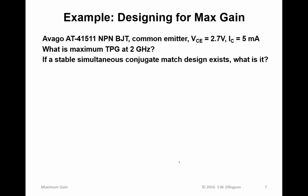Let's do an example. We previously discussed the Avago AT41511 transistor — it's an NPN BJT, bipolar transistor. We'll assume it's in common emitter configuration. Here's the collector-emitter bias voltage and the collector current. We need these only to look up the S-parameters. The question now is: what is the maximum TPG for this transistor at 2 gigahertz? And if a simultaneous conjugate match design exists, what is that design?